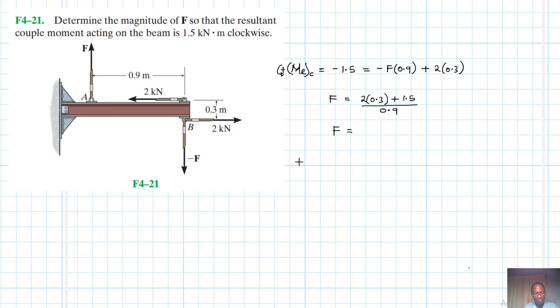This gives us 2.33 kilonewtons. 2 by 0.3 plus 1.5 divided by 0.9 - we have 2.33. Okay, so this is the value of F, this is the value of F for this particular problem.